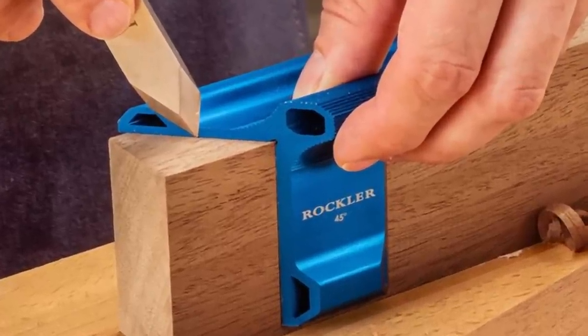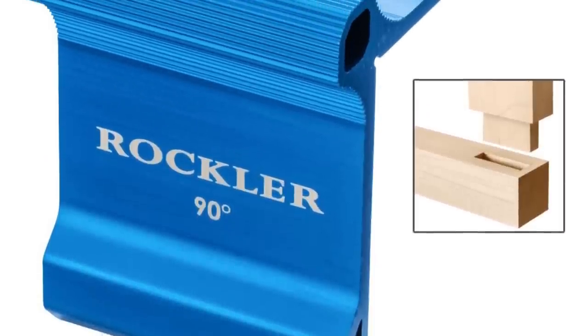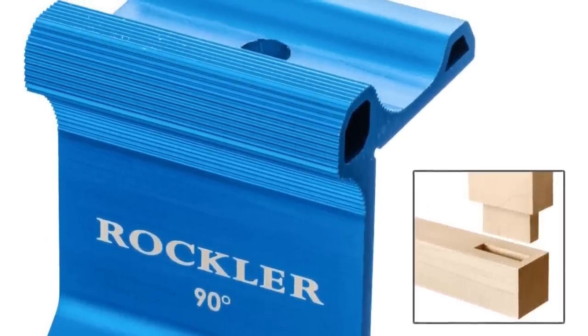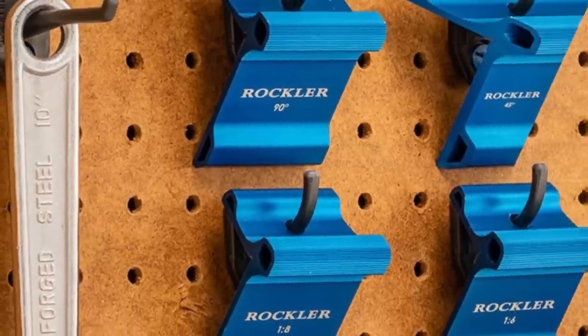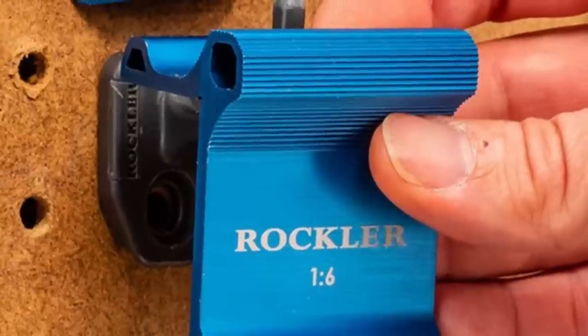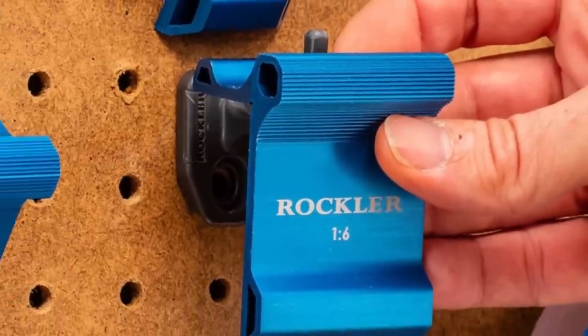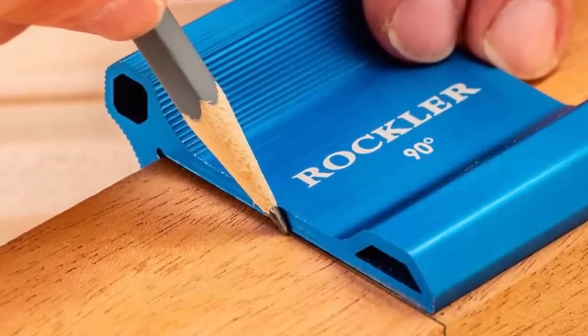They're easy to identify with their angle markings. The squares can accommodate material up to 2.25 inches wide and 1.25 inches thick. A textured grip provides security and hang holes allow easy pegboard storage. The Rockler Saddle Squares are vital for woodworking projects, ensuring square or miter cuts. They give you an accurate layout for perfect woodworking and joinery.